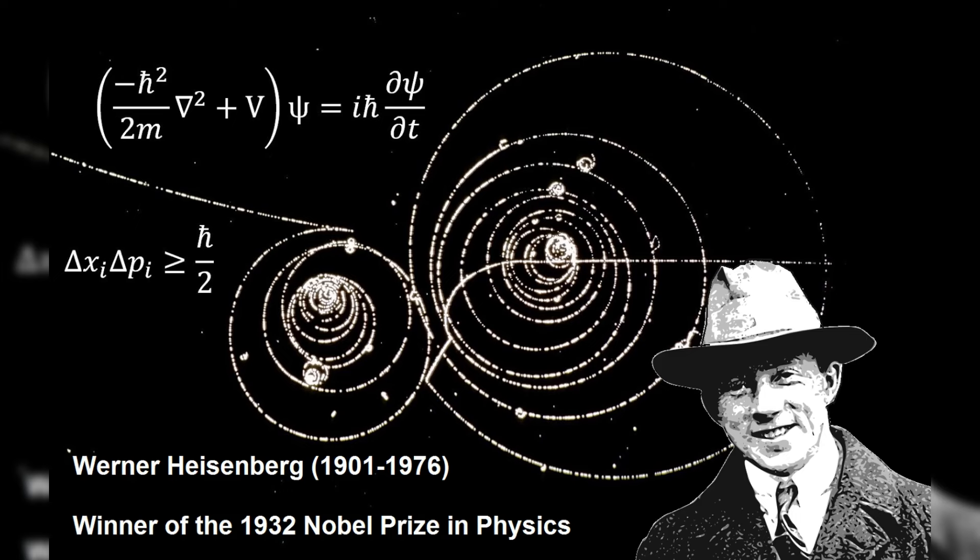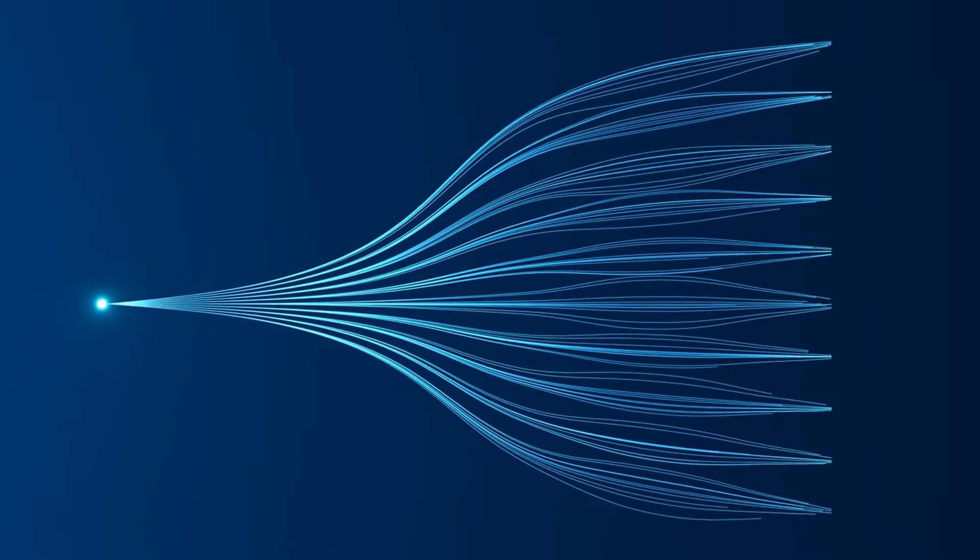Heisenberg's uncertainty principle stated that the position and velocity of a particle could not both be precisely measured at the same time, introducing a fundamental limit to our knowledge.